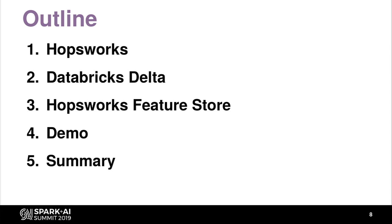This is my outline. I'll begin by giving a brief introduction to our platform, HoppsWorks. Then we'll go into Delta and see how Delta works internally, what is the motivation for it, and how it compares to other similar frameworks. Then we get to my main point, which is how we can use Delta to build a feature store for machine learning. We'll do a case study on the feature store we've built, and I'll also try to do a live demo to show you the feature store in practice. Finally, I will summarize and give hints if you want to try out the platform or learn more.